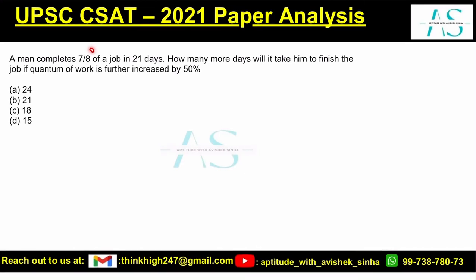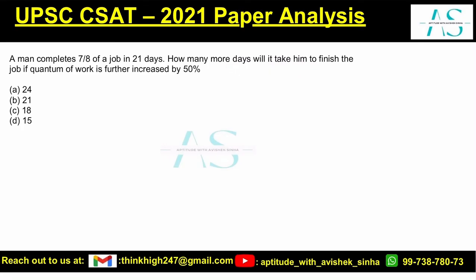A man completes 7/8 of a job in 21 days. How many more days will he take to finish the job if the quantum of work is further increased by 50%?